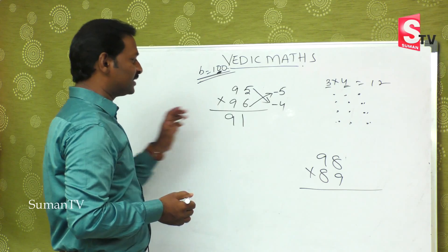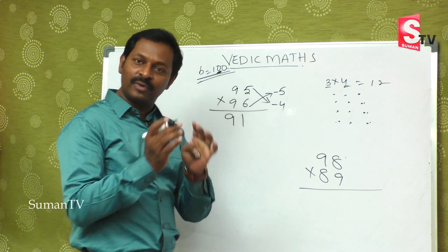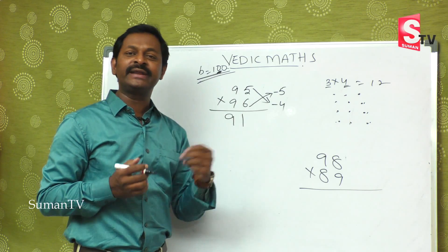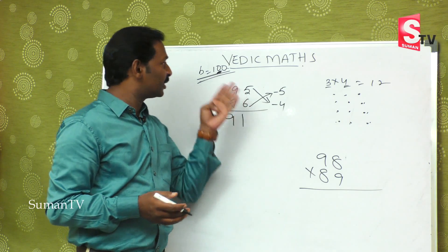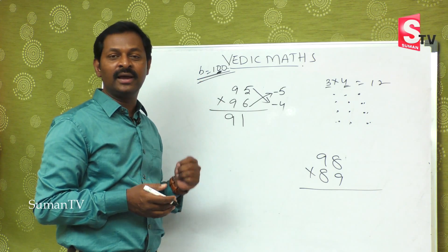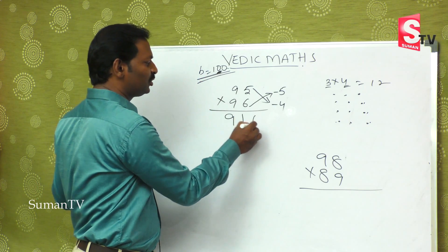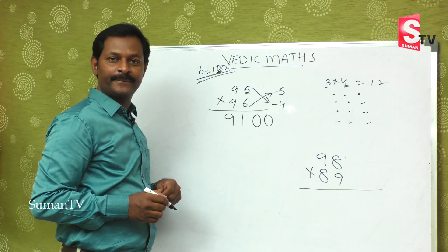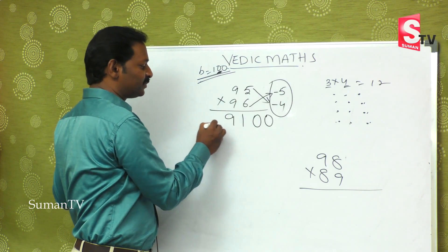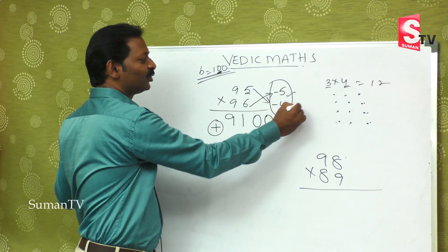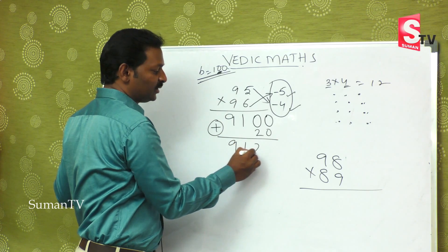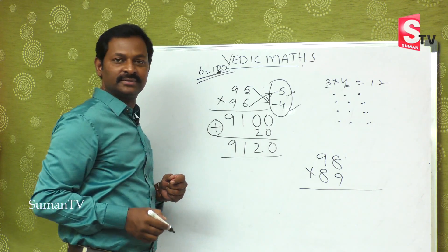The second part of the answer: because the base value is 100, there are two zeros, so we put two places. Minus into minus is plus — 5 fours are 20. The final answer is 9, 1, 2, 0. This is the right answer.